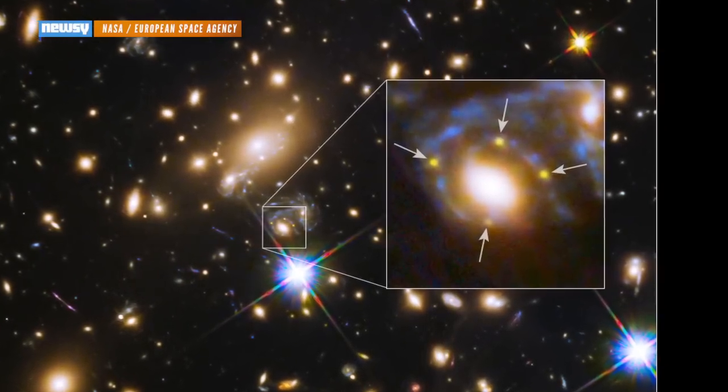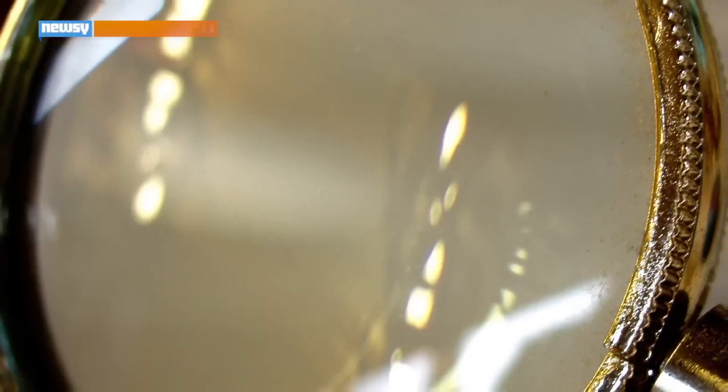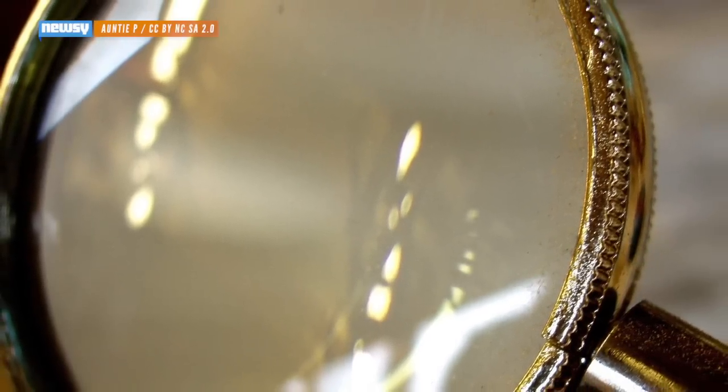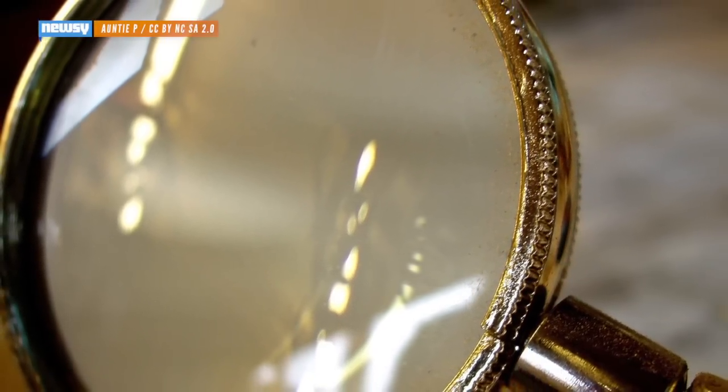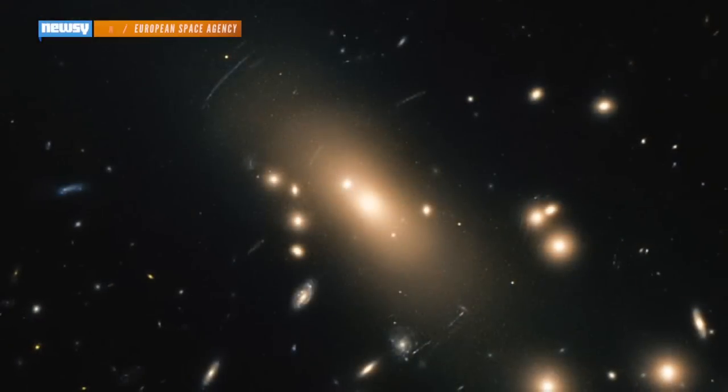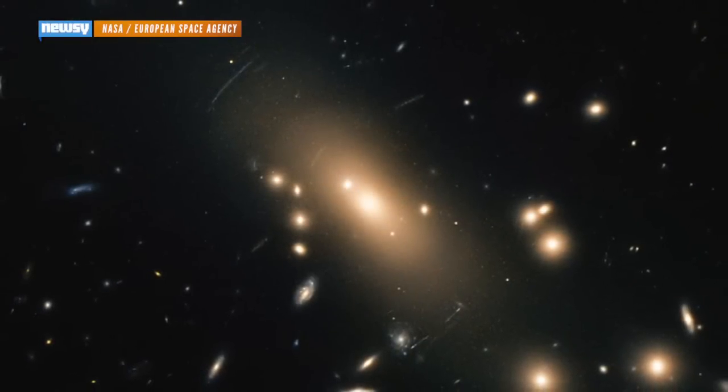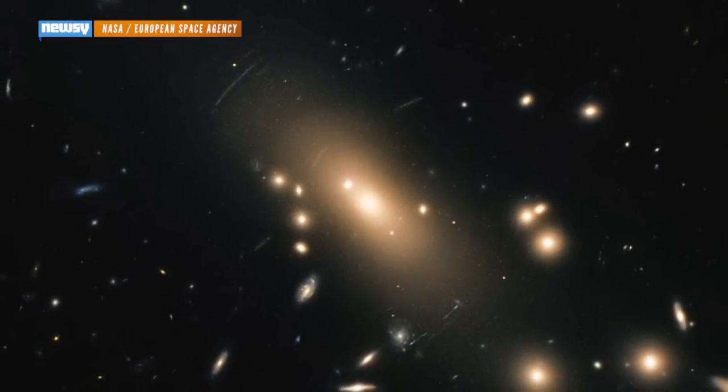That's the same supernova on all four sides of the galaxy. The unusual phenomenon comes from the fact that light can be bent, like in a magnifying glass. Only instead of glass lenses, it's gravity that does the bending, like the gravity from galaxies or even galaxy clusters.